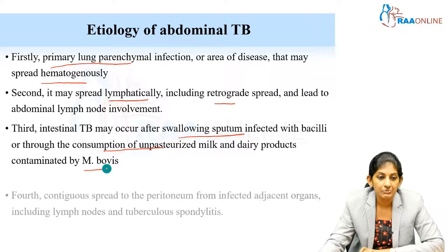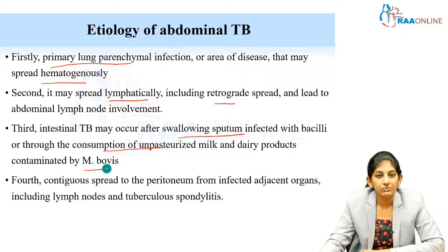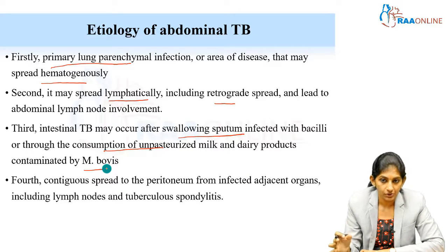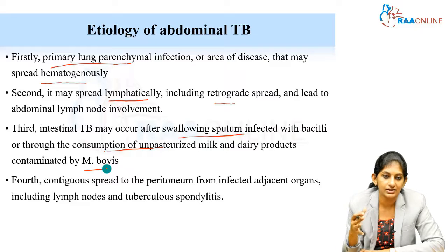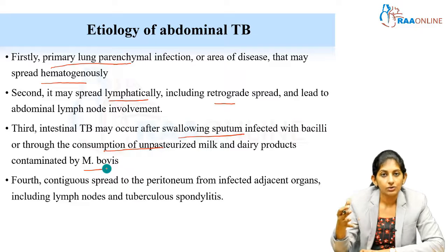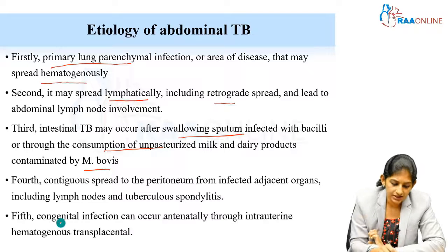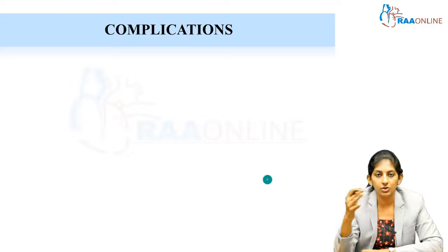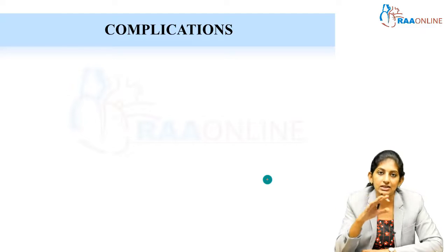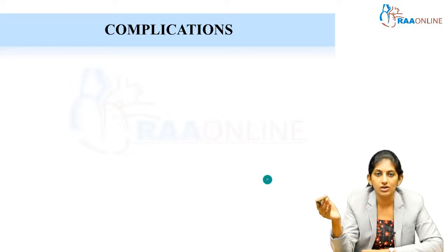Ingestion of infected milk is very rare. Fourth is contiguous spread to the peritoneum — adjacent organs are infected and it spreads contiguously, including from lymph nodes or the spine. Fifth is congenital infection, where the child can present with an indolent or insidious presentation such as long-standing fever, weight loss, or abdominal pain.